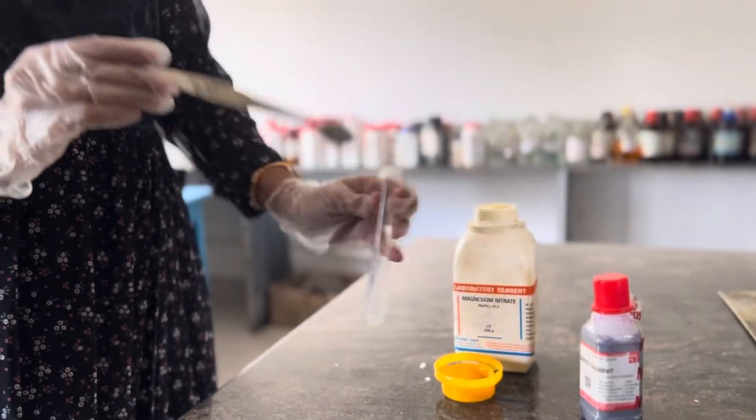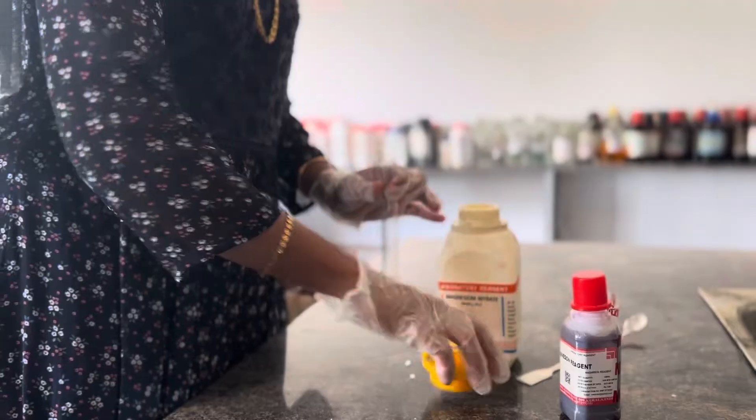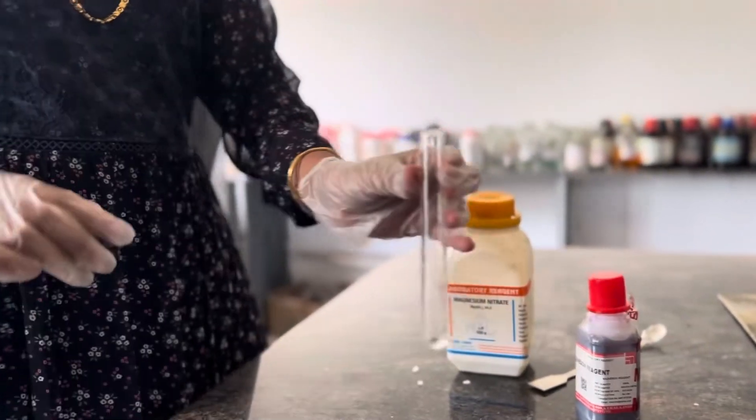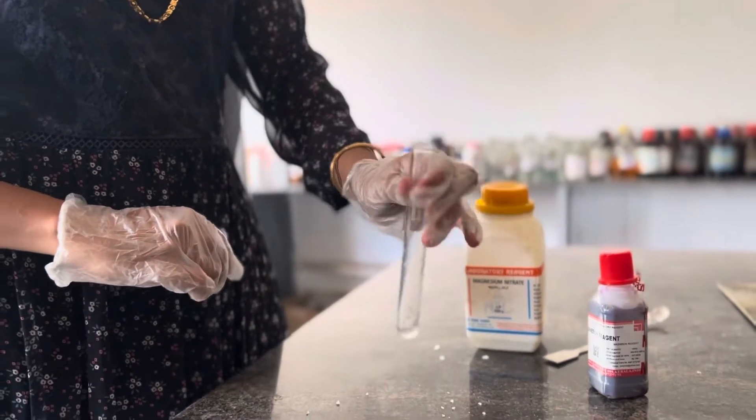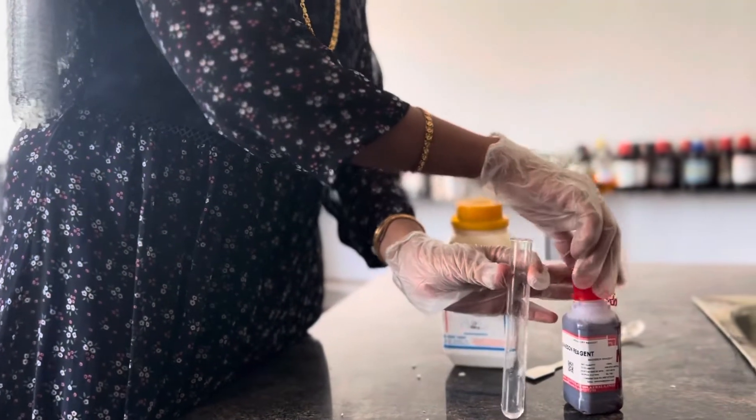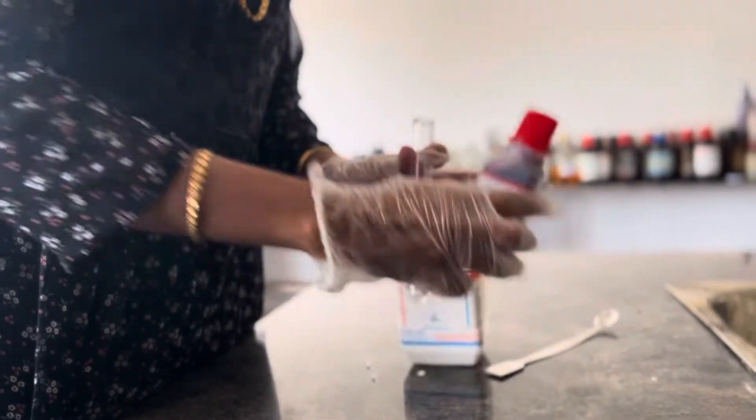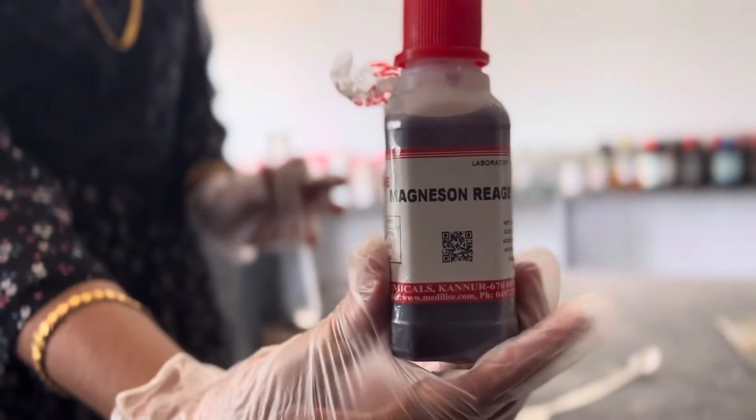For this test, first of all you have to do the test for the other cations like 0 group, 1st group, 2nd group, 3rd group, 4th group and 5th group. If you are getting negative result in that, now you have to go for the confirmatory test for the magnesium.